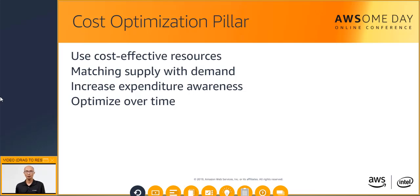Our next pillar is the cost optimization pillar, which includes the continuous process of refinement and improvement of a system throughout its entire life cycle. This pillar encompasses the idea that you can build and operate cost-aware systems and maximize return on investment. The four areas that make up the cost optimization pillar include cost-effective resources, matching supply with demand, expenditure awareness, and optimizing over time. A fully cost-optimized system will use all resources to achieve the best outcome at the lowest possible price point while still meeting your functional requirements. Using the appropriate services, resources, and configurations is one of the key parts to cost savings.